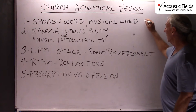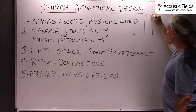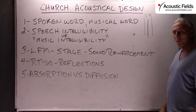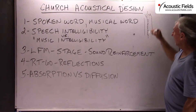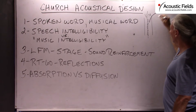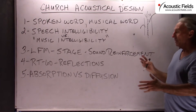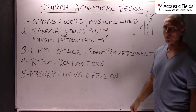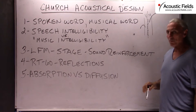And this is the problem — trying to get the two scales, the voice and the music, to align. There's only a little bit of overlap where you can shoot for RT60 times and speech intelligibility times. That's why it's so difficult with churches to get it right, because the treatment you use for music is a little bit different than the treatment you use for voice. It's a balancing act — you have to balance the spoken word and the musical word together.